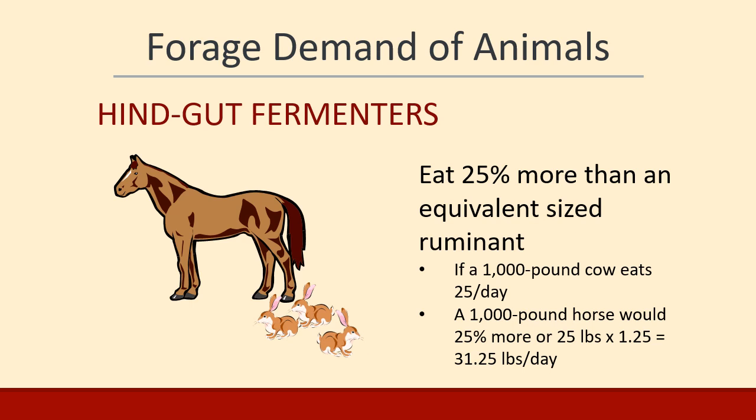From the nutrition lecture, we learned that hindgut fermenters have an ability to eat a lot more food. They can pass lower-quality food through their system, harvest the best nutrients, and pass the rest out. So horses, donkeys, burros, rabbits, and other small rodents are hindgut fermenters and eat more than a ruminant of the same size. To calculate how much a hindgut fermenter eats, calculate what an equivalently sized ruminant would eat and then multiply by 1.25, because they eat 25% more.